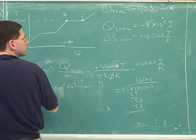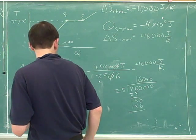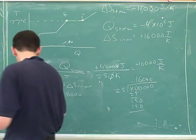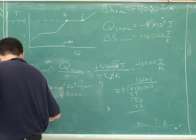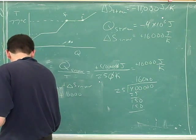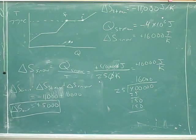That sounds good. Delta S for the steam was negative 11,000, so we have to keep using the signs. And delta S for the snow is positive 16,000. So did you get a positive answer or a negative answer? Positive. Of course, if we haven't been careful with the signs, that answer wouldn't come out correctly.